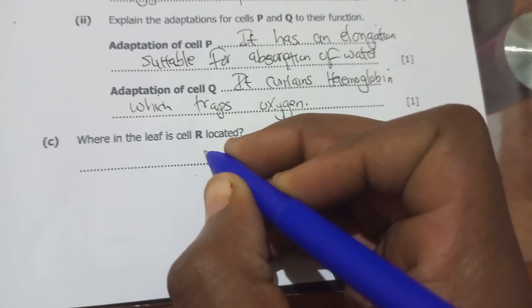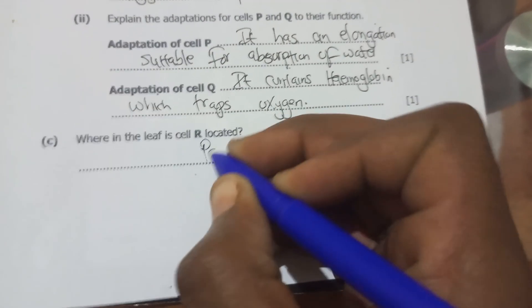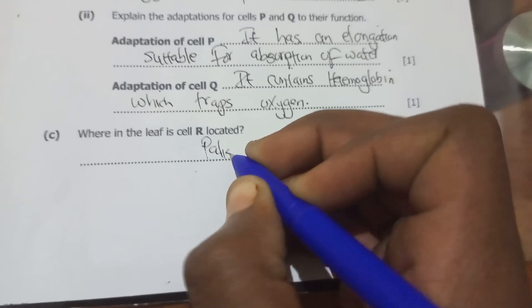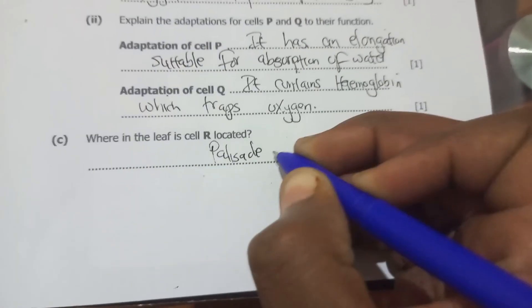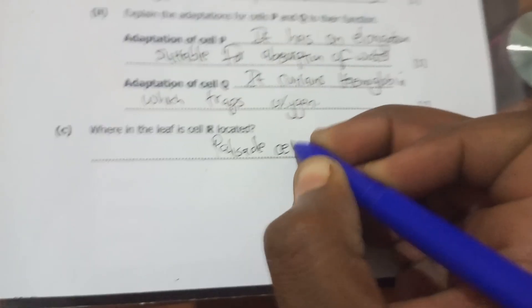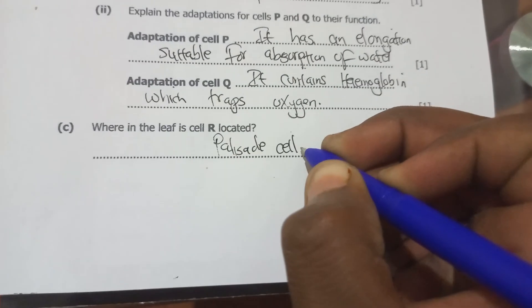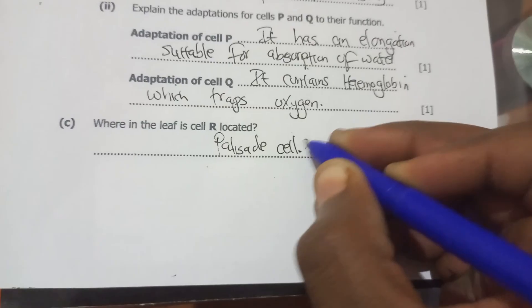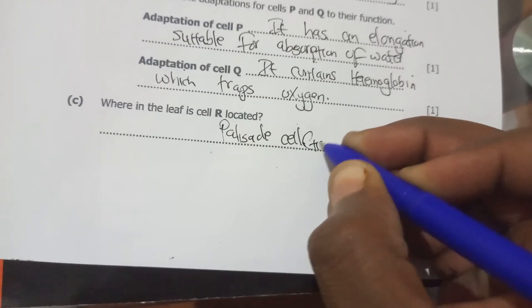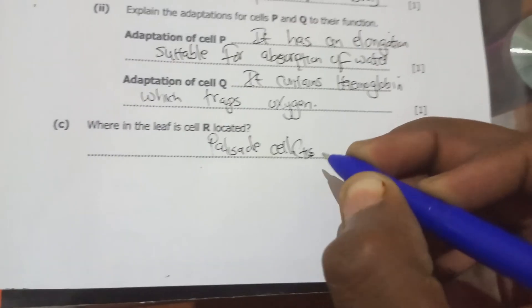Where in the leaf is cell R located? We're going to find that this is found in the palisade cell or palisade tissue.